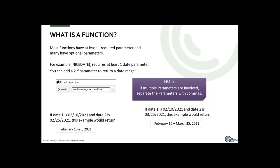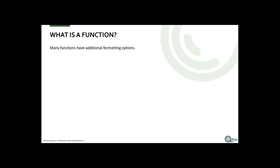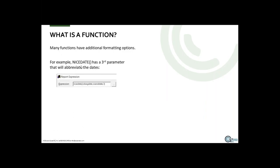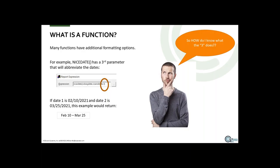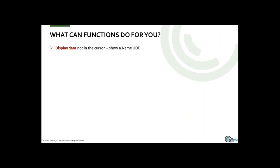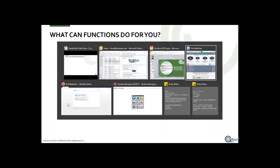These are examples of how nice_date operates. The parameters are co_begin_date and co_end_date. Some functions have formatting options — for instance, nice_date has a third parameter that abbreviates the dates. Adding the number 3 to nice_date will return an abbreviated month and day. To find out what each parameter number does, you would use the help guide, so let me roll to a browser.